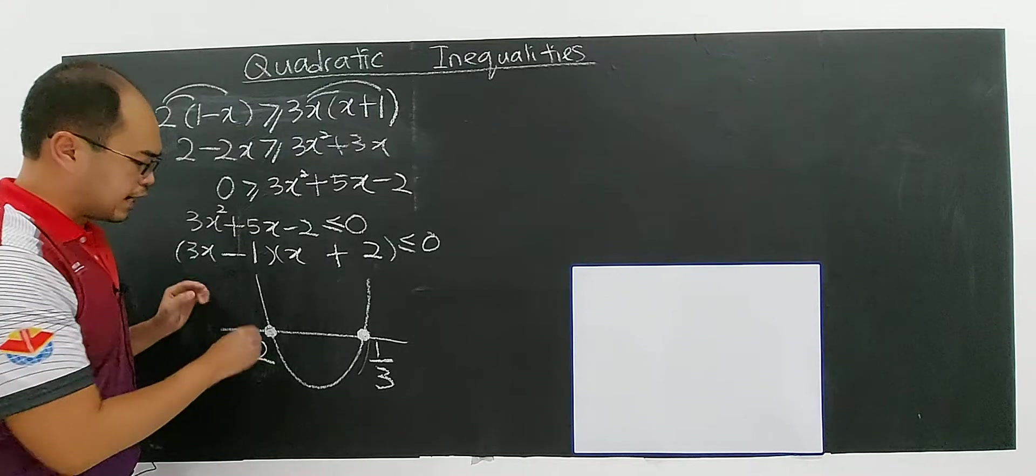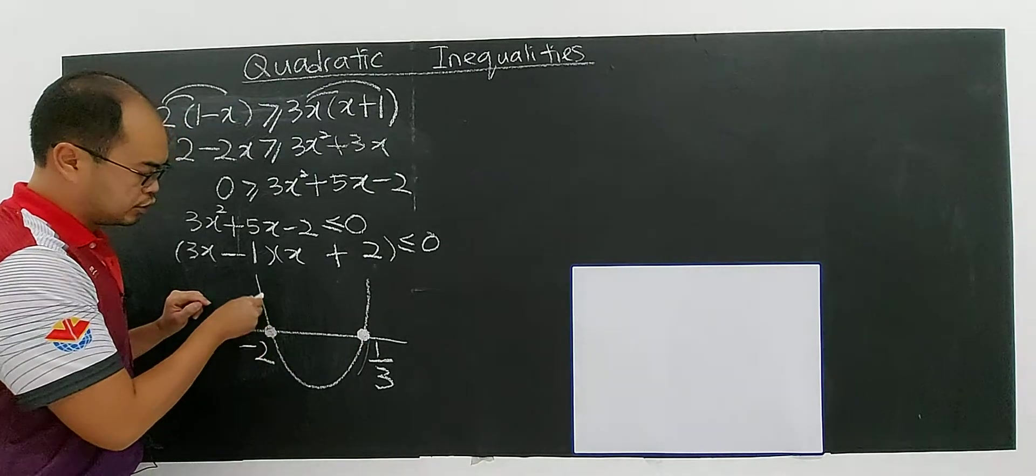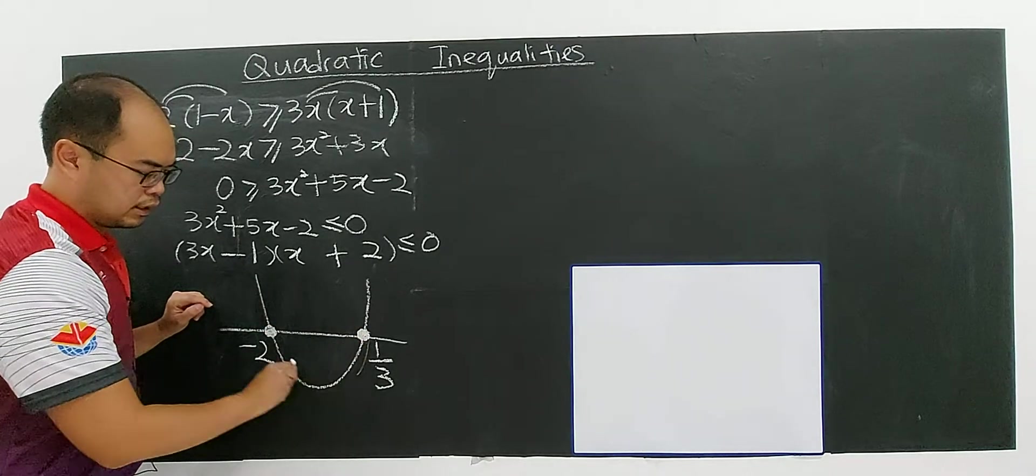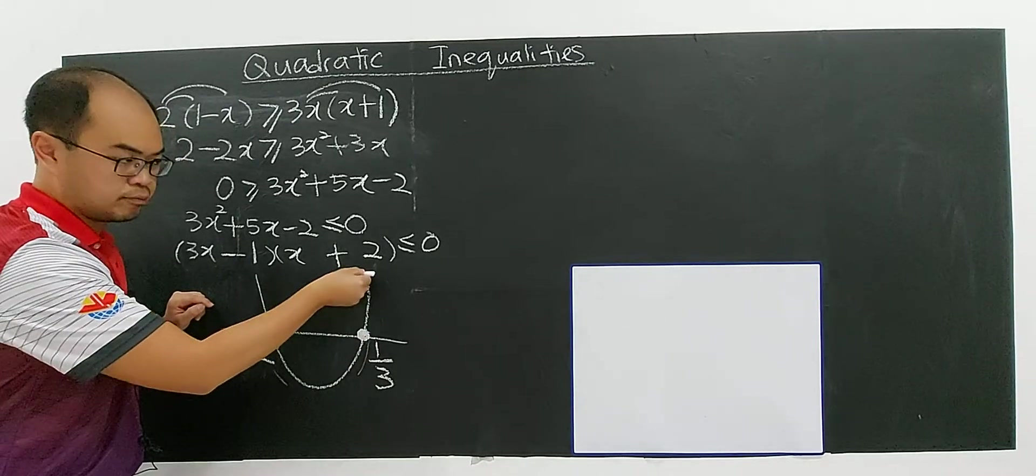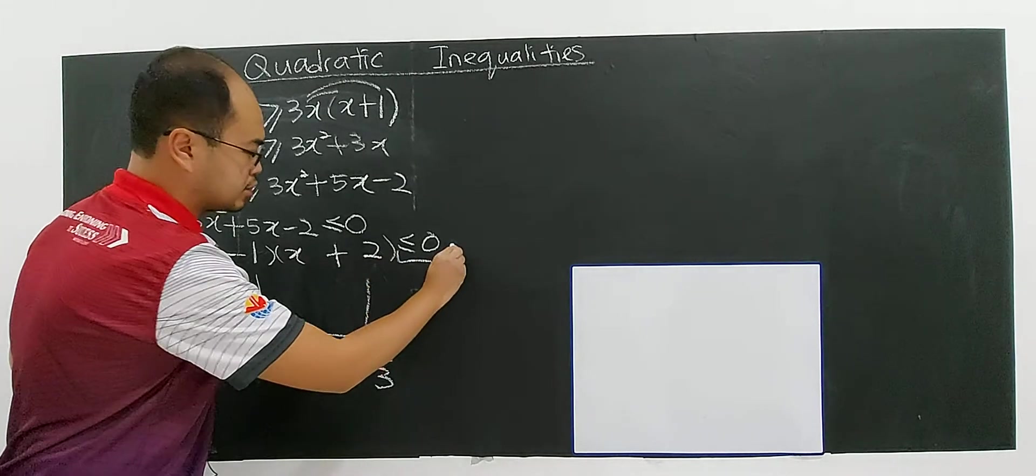We're going to decide either they are above the x-axis, means this region or this region. Above will be positive. And this one will be negative. So if you see that less than 0, this quadratic is less than 0.